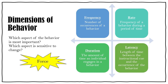Duration is the amount of time an individual engages in a behavior — such as the amount of time a kid is on task or up out of their seat. Latency is the length of time between the instructional cue or antecedent and the occurrence of the behavior — for example, how long it takes a kid to start an assignment, or how long it takes after the teacher asks a wandering student to sit down. Force is the intensity or magnitude of the behavior — for instance, a kid pressing very hard on their pencil, or a kid who speaks very softly when answering questions, where you might want to increase their voice volume.